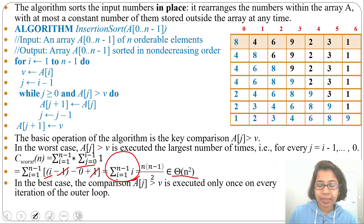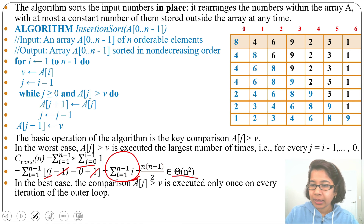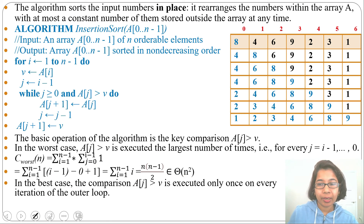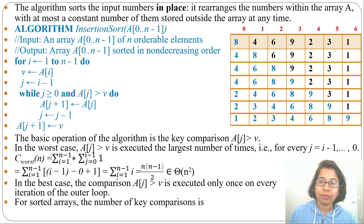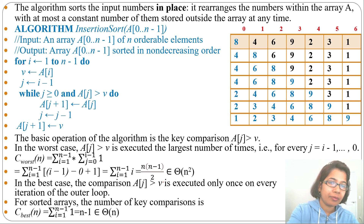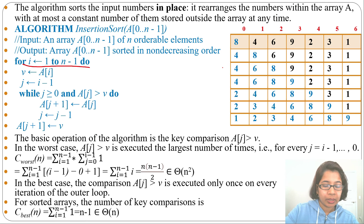In the best case — when the array is already sorted — the comparison executes only once per iteration of the outer loop, since we immediately find the element is in the right position. Therefore the best case running time is Θ(n): one comparison for each i from 1 to n-1, giving n-1 comparisons, or Θ(n).